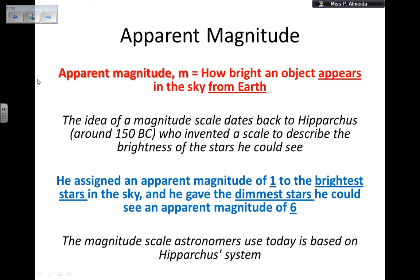This started back in 150 BC when a guy called Hipparchus was looking at the sky and invented a scale to categorize stars into different groups, from the brightest to the dimmest.